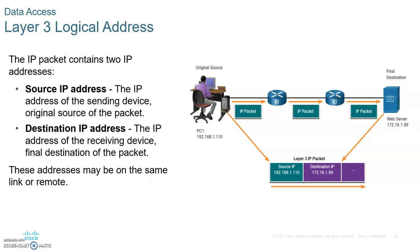Let's look at more detail about the layer three address. The source IP address identifies the network you are in; it's usually given to you by the DHCP server, similar to the source zip code on a letter. The destination IP address identifies the network destination; it's usually given by the DNS server, similar to the destination zip code on a letter. Both source and destination IP addresses are attached at the network layer, layer three of the OSI model.